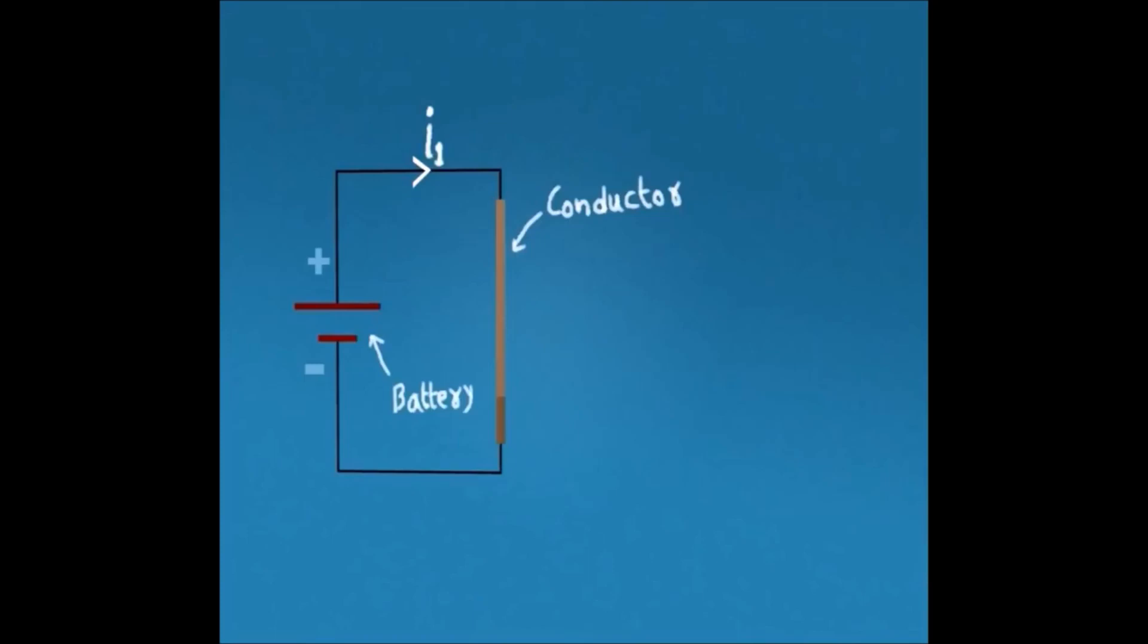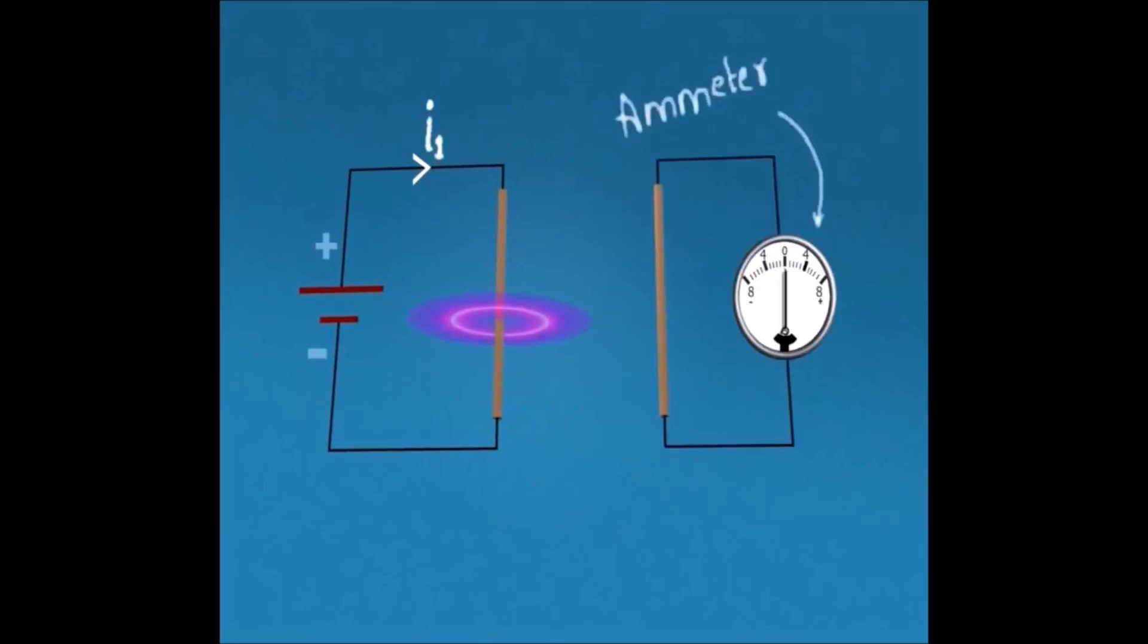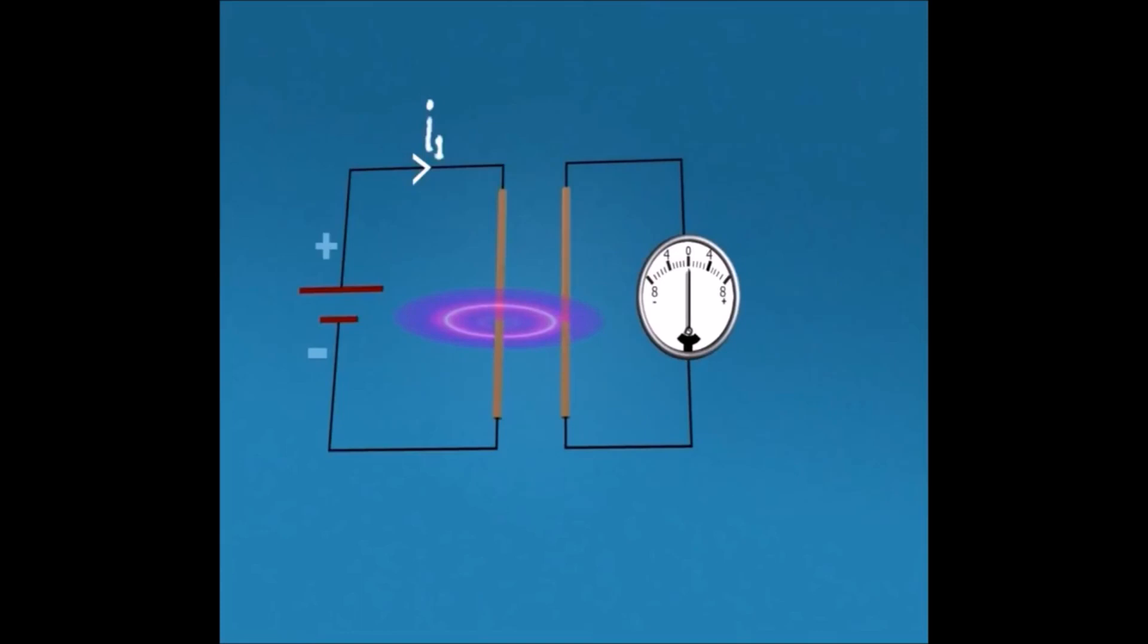As a result, a magnetic flux gets set up around the conductor. If another piece of wire comes in the vicinity of this flux, an electromotive force is induced in the conductor which we can see here from deflection in the needle of a galvanometer.